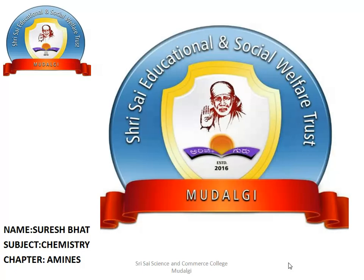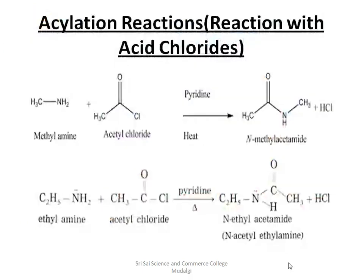Today we will continue with the chemical properties of amines, starting with acylation reactions — commonly called reaction with acid chlorides. Acid chlorides have the formula R-CO-Cl. If R is CH₃, then it is CH₃COCl, which is acetyl chloride. We will see how acetyl chloride reacts with amines.